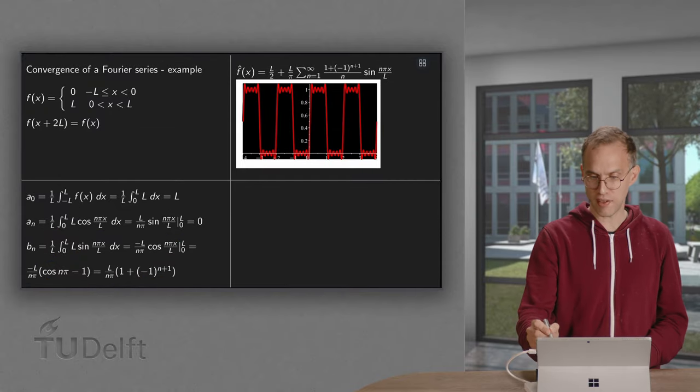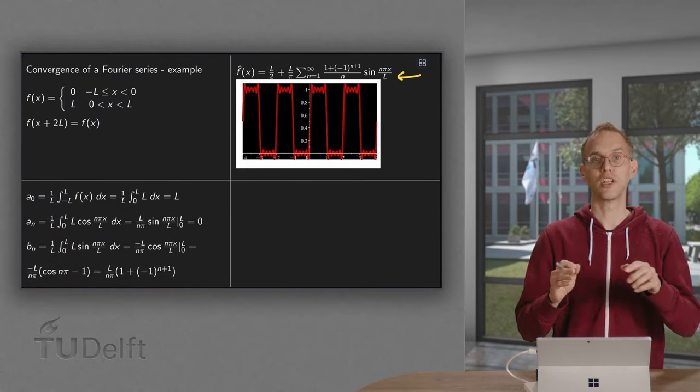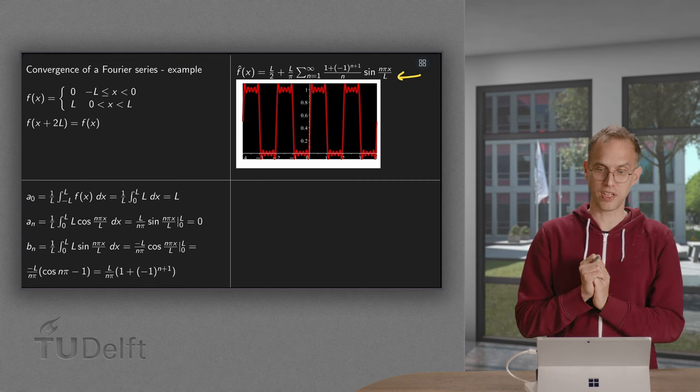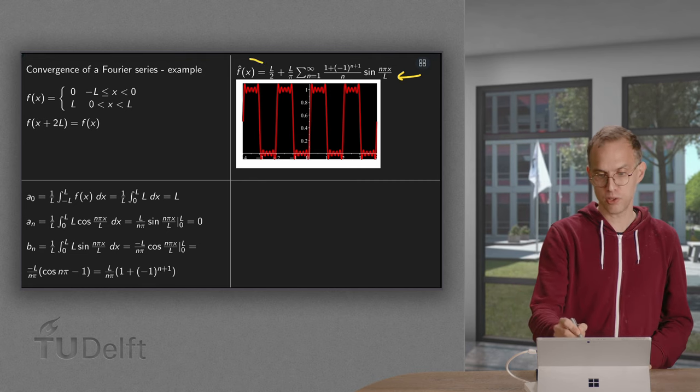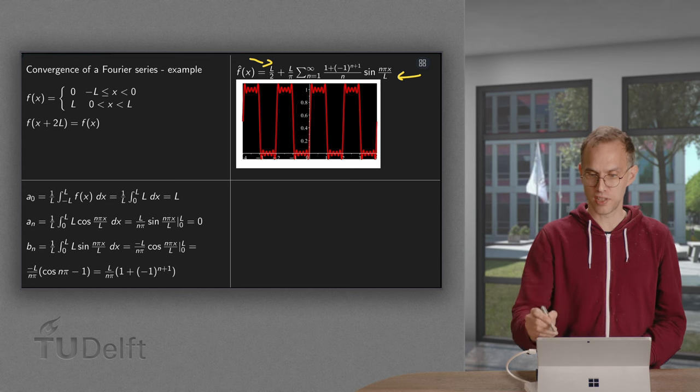Then we have our f hat of x, the Fourier series corresponding to our f of x. We have a₀ over 2, the l over 2, plus the series with the sine.